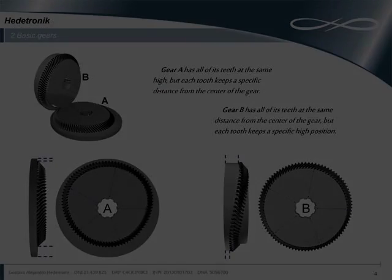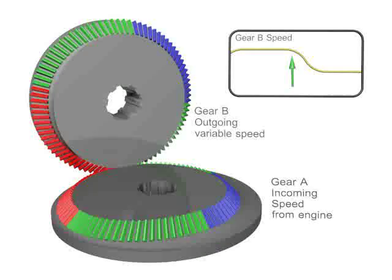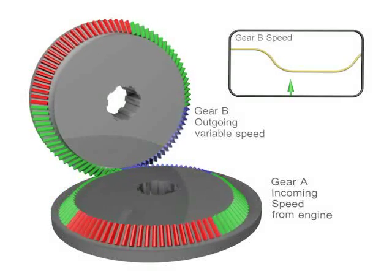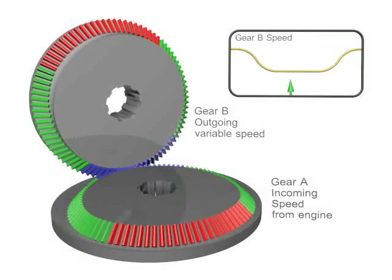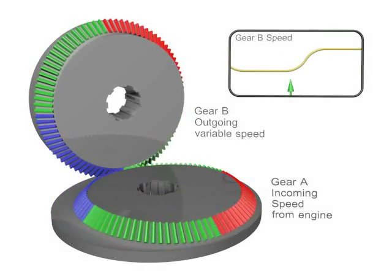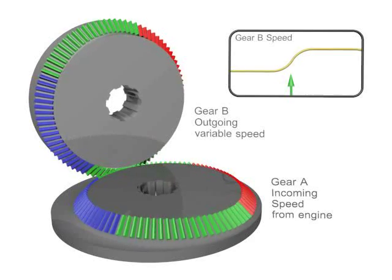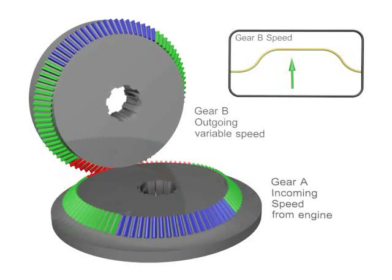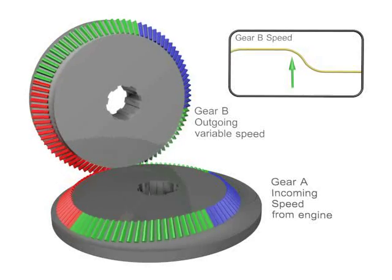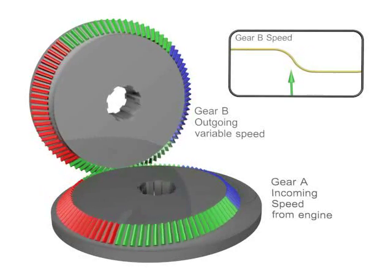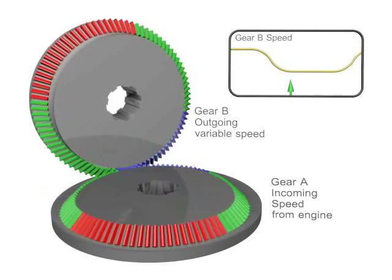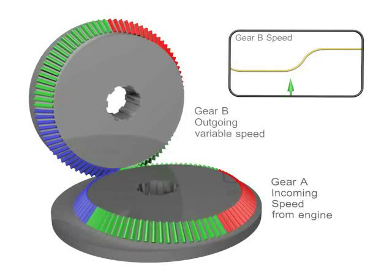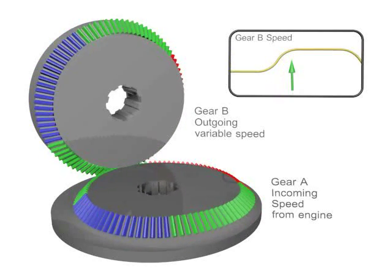Let's see these two gears functioning. In this example, Gear A receives the speed and strength directly from the engine. Gear B varies in speed as shown in the graphic. Gear B varies in speed from a minimum to a maximum speed, maintaining each speed for a specific space of time.